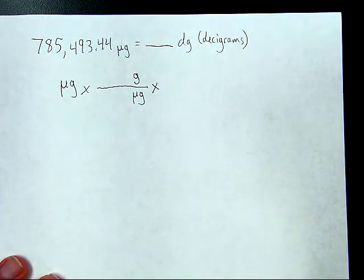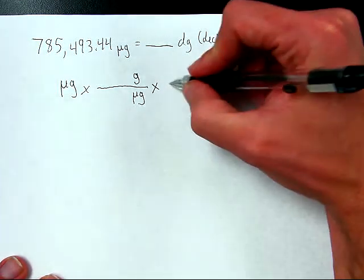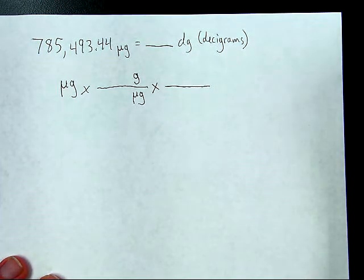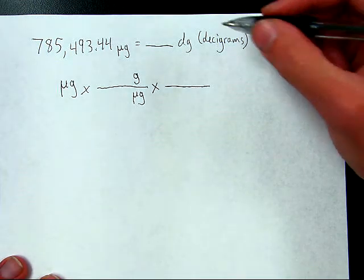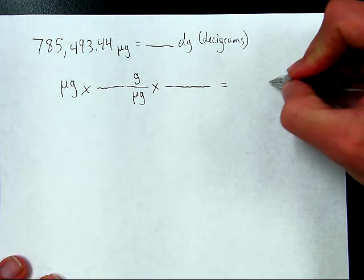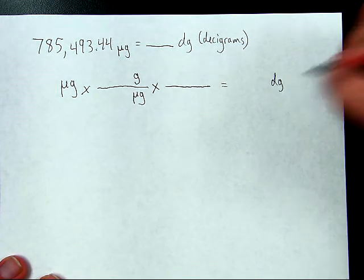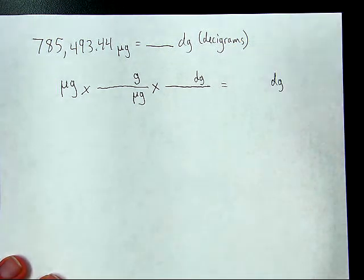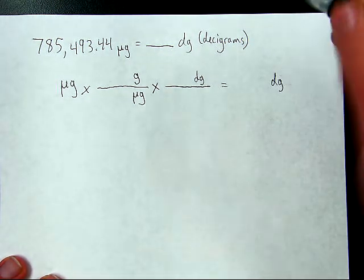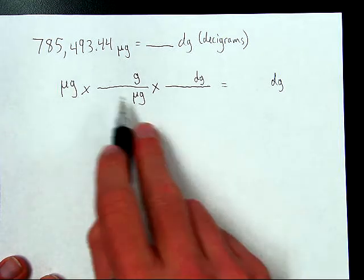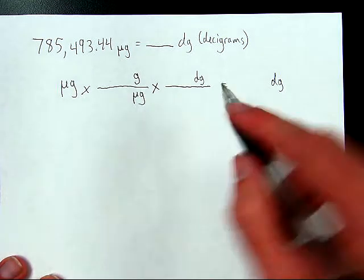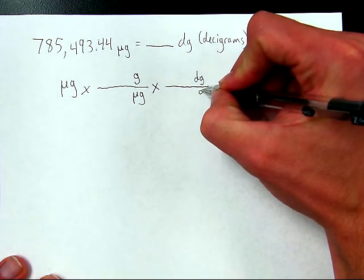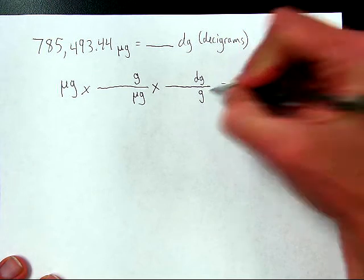Then I set up the second conversion factor in order to be able to finish this. I need a final answer with decigrams in it. So how do I get to there? I'm going to make sure decigrams is on top here. That way it comes out in the final answer. Micrograms cancels with micrograms. I need to make sure grams gets cancelled out up top over there by grams down bottom over here.